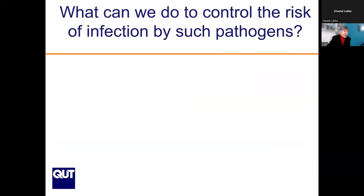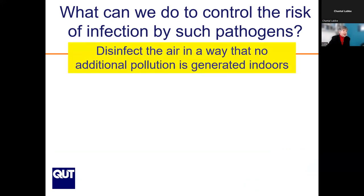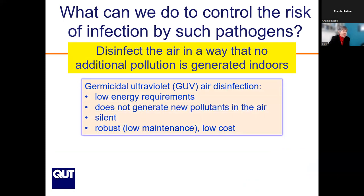WHO currently recommends 10 liters per second per person in shared spaces. The theoretical limit of what ventilation can do was presented as far back as 1991 by Ed Nardell — so this is not unexpected or new. We knew that with some very infectious diseases there would be a problem. Can we control the risk? We can. The solution is disinfecting the air in a way that generates no additional indoor pollution, using germicidal UV air disinfection, which requires low energy, does not generate new pollutants, is silent, robust, low maintenance, and low cost.